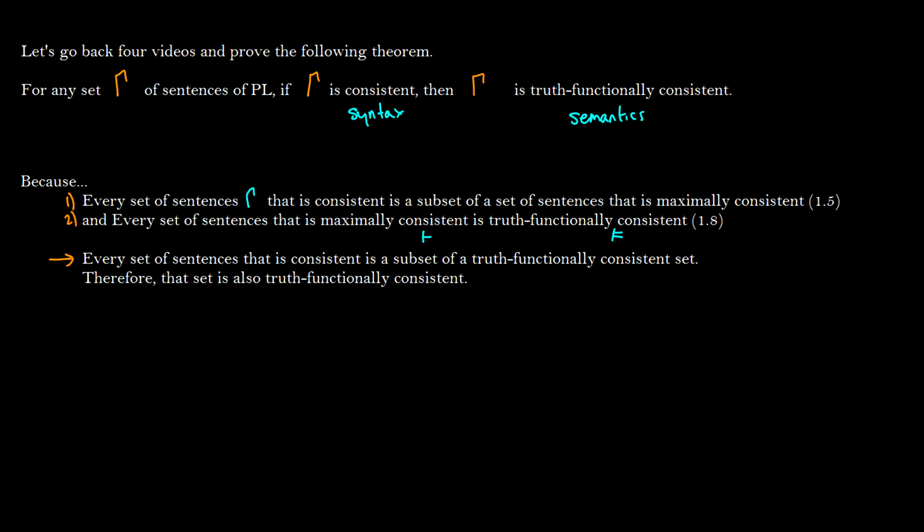So essentially the first one says if we have gamma we can extend it to gamma star. And we know that gamma star is also going to be truth functionally consistent now.